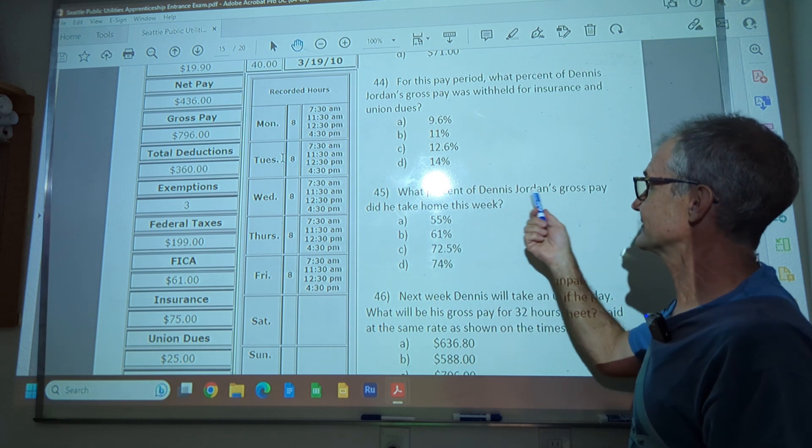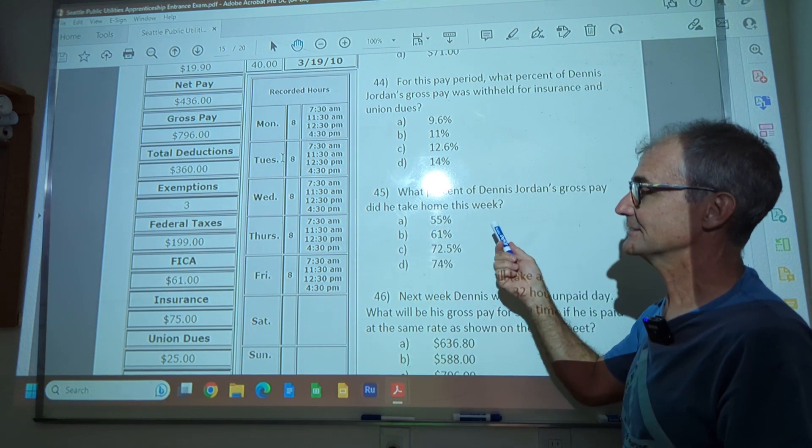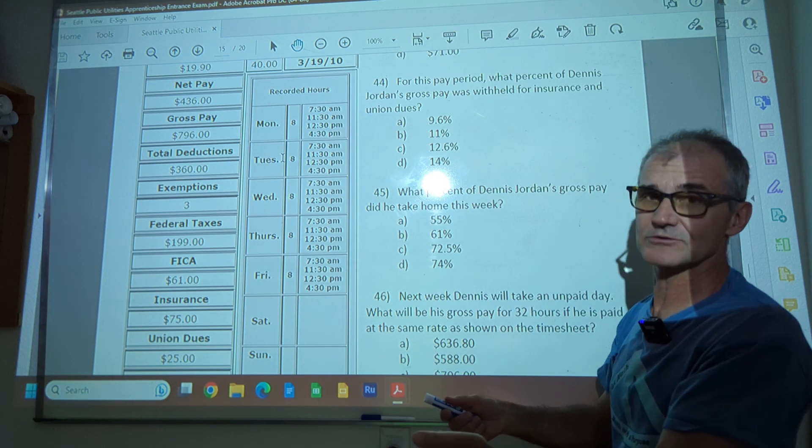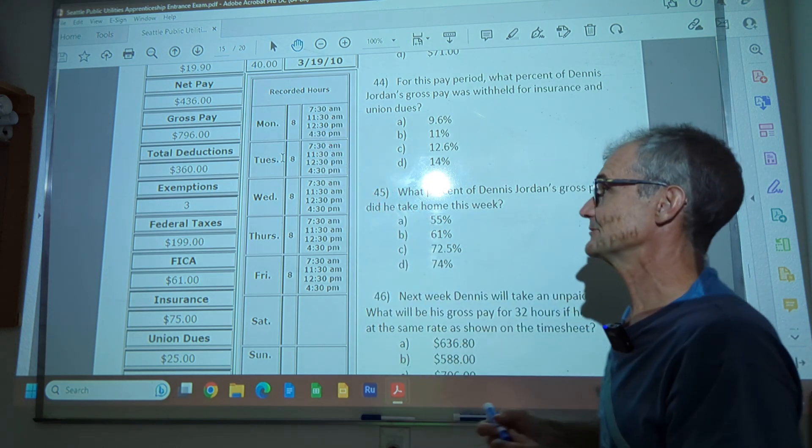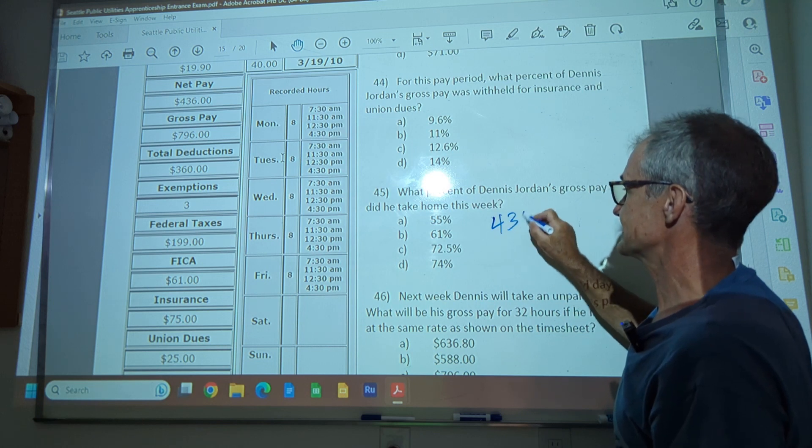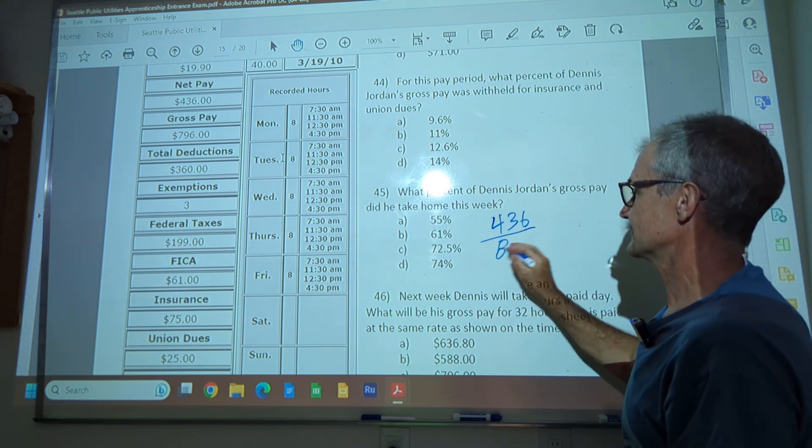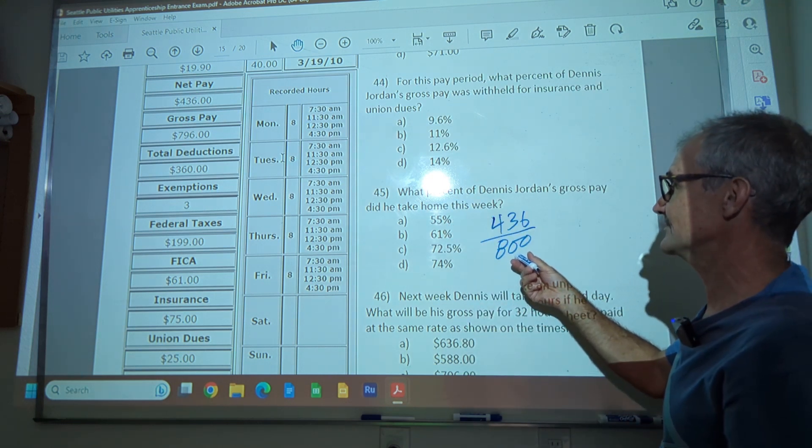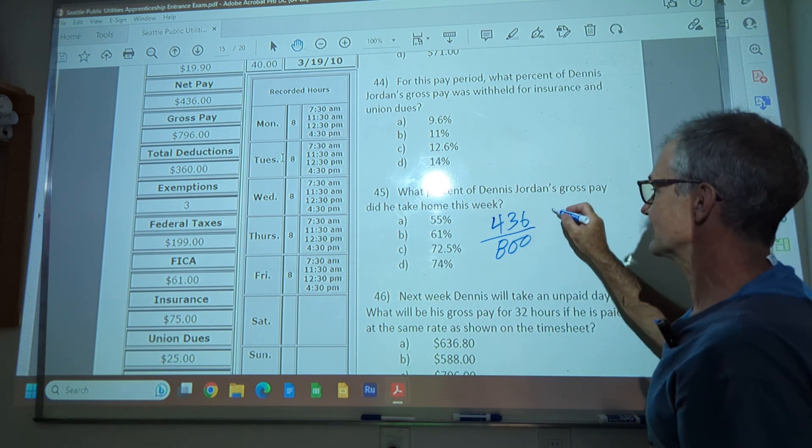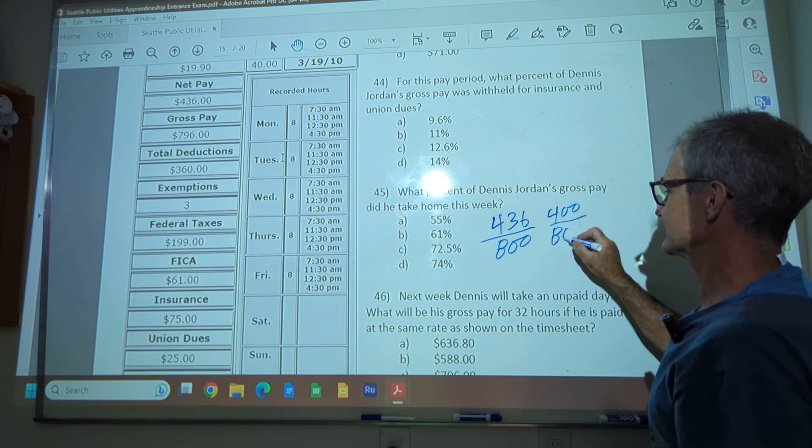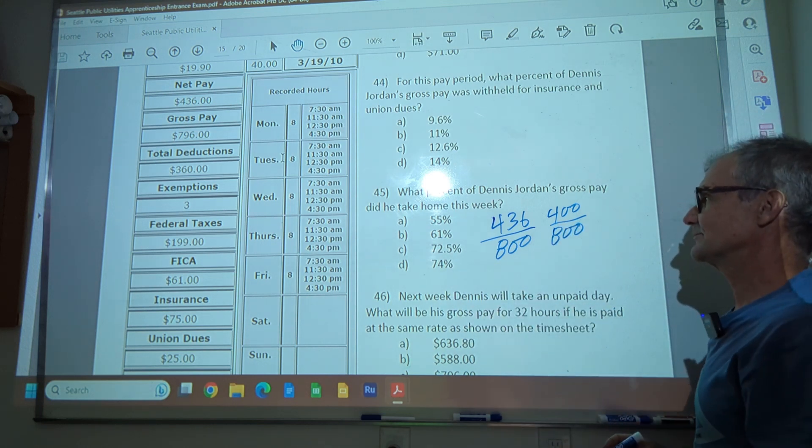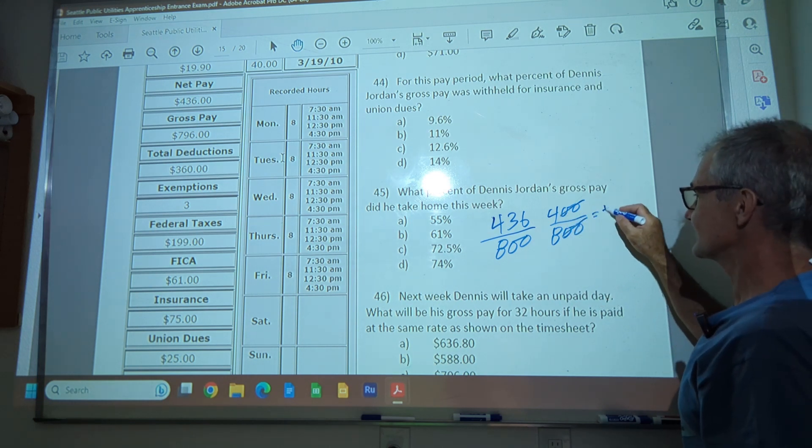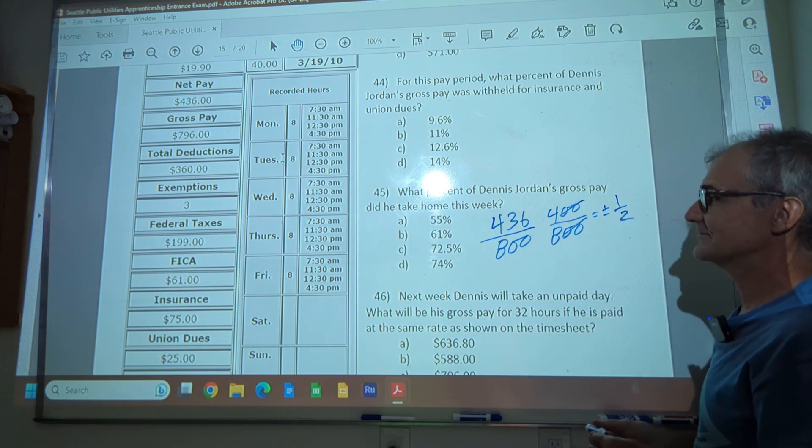What percent of Dennis Jordan's gross pay did he take home this week? So what is it we want? We want a percentage. What did he take home over the total? What he takes home is called net pay. So we want to know his net pay for 36 over his gross pay. So what percent did he take home out of the total? Again, I rounded this up to 800. I'm actually going to round this down to 400. But it's a pretty big rounding there. But I think it's going to show itself that it's going to only be one possibility. These zeros cancel with these zeros. Four over eight is about plus or minus about a half. A half is 50 percent.